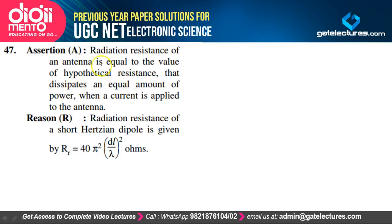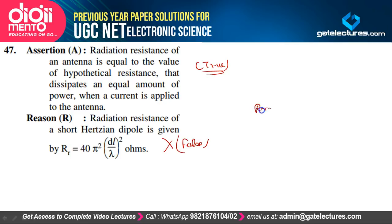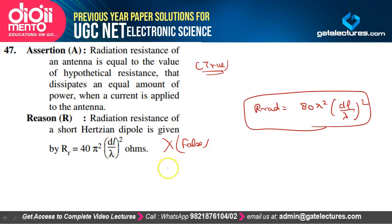Radiation resistance of an antenna equals the hypothetical resistance dissipating equal power — true. Radiation resistance of a short Hertzian dipole is 80π²(DL/λ)², not 40π²(DL/λ)² — so R is false. Assertion is true, reason is false. Option C is correct.